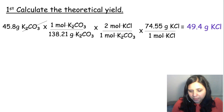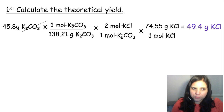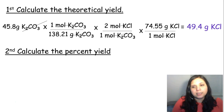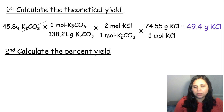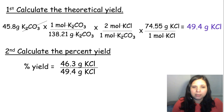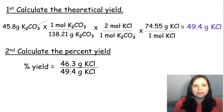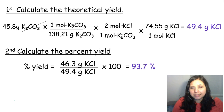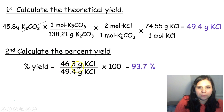49.4 grams of potassium chloride is our theoretical yield — the maximum amount of product obtainable using the amount of potassium carbonate reactant we started with. Now for percent yield, take the actual yield, 46.3 grams of potassium chloride, divide by the theoretical yield, 49.4 grams, and multiply by 100. The result is 93.7%, rounded to three significant figures.